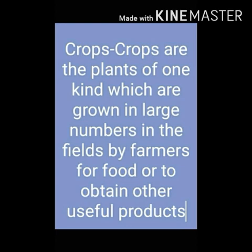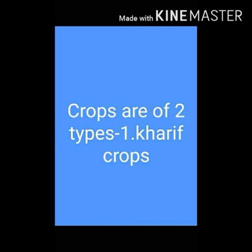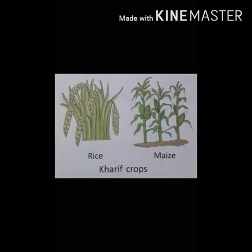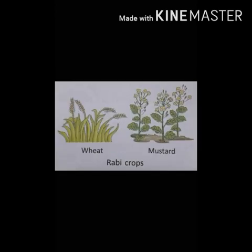Different crops are grown in different seasons. There are two types of crops: kharif crop and rabi crop. Examples of kharif crops include rice, maize, jowar, bajra, peanuts, jute, soybean, and cotton. These kharif crops are grown during the summer season, that is from June to October.